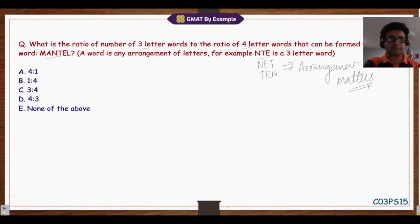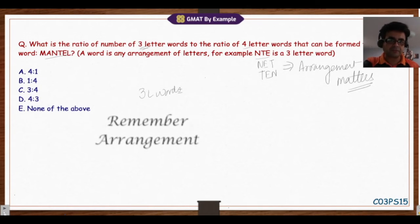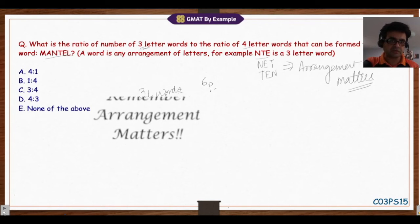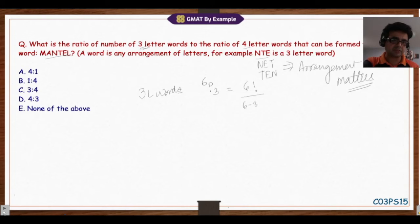We're going to try to solve this question without a lot of calculations. Let's apply the permutation formula here and try to create three-letter words from six letters given in MANTLE. So three-letter words can be formed by 6P3 ways, which is 6 factorial divided by (6 minus 3) factorial. That equals 6 factorial divided by 3 factorial.